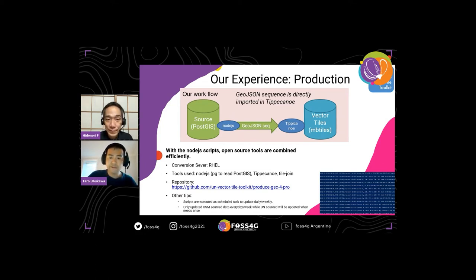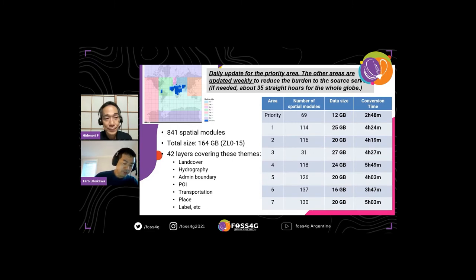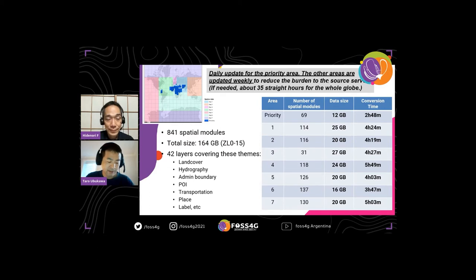Our method is open and you can see it at our GitHub repository. Regarding the product, we have 841 MBTiles covering the whole globe, and it is about 150 gigabytes in total. If we convert the whole globe at once, it would take 35 straight hours. But thinking about priority areas, we update some parts of the world daily and other regions are updated weekly. This strategy also helps us to reduce the burden on the source server.